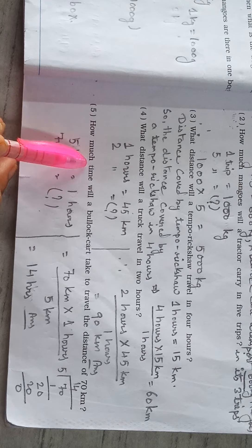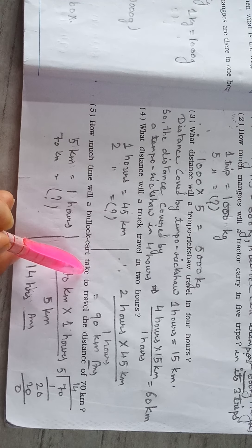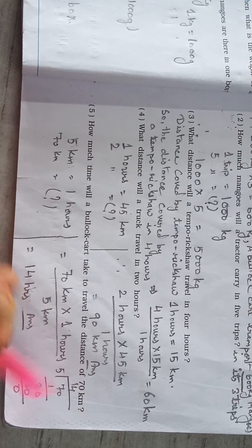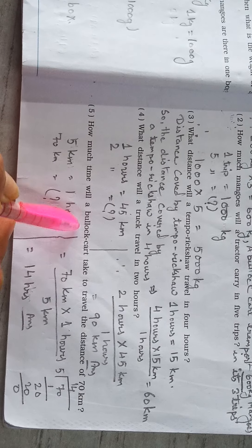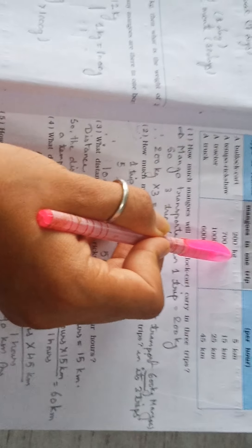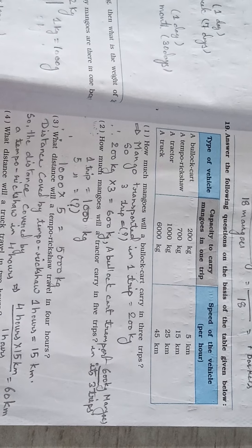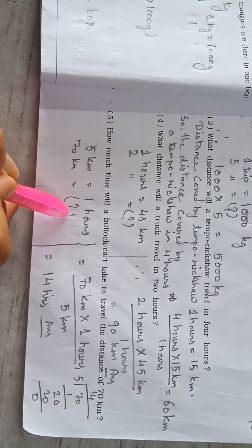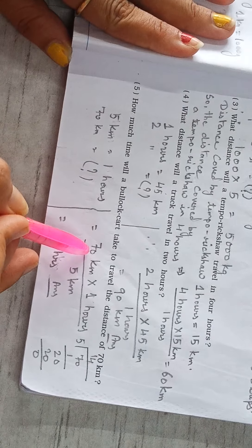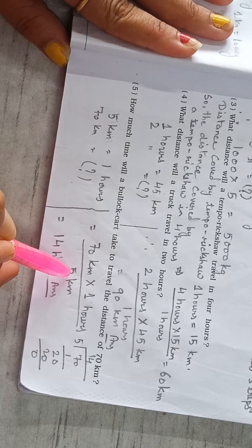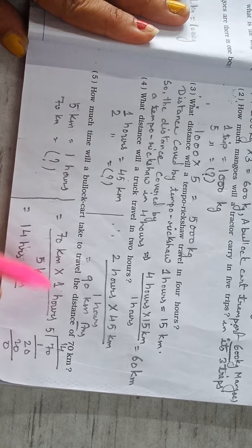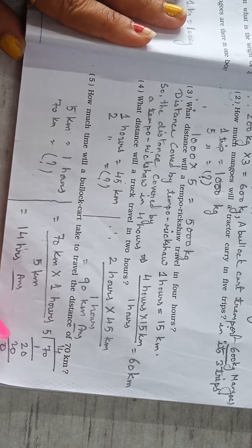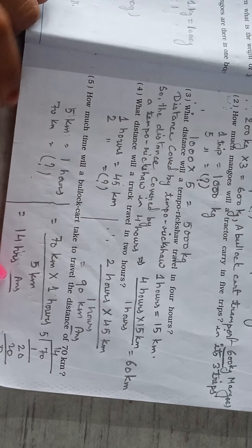Now question number 5: How much time will a bullock cart take to travel a distance of 70 km? From the table, a bullock cart travels 5 km per hour, so 5 km equals 1 hour. For 70 km, therefore 70 km multiplied by 1 hour divided by 5 km. 70 divided by 5 equals 14. So the answer is 14 hours.